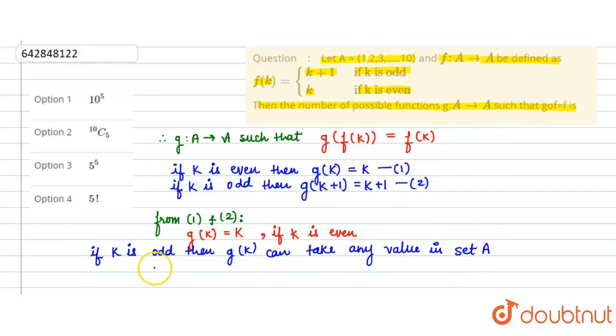हमें find out करना था number of G of F, so number of G of K will be कितना हो जाएगा? 1 से लेके 10 है, अब इन 10 में 5 odd है, 5 even है, तो हम choose करेंगे कैसे 10 to the power 5? तो ये हो जाएगा हमारा answer, 10 to the power 5 only, तो ये हो जाएगा हमारा final answer